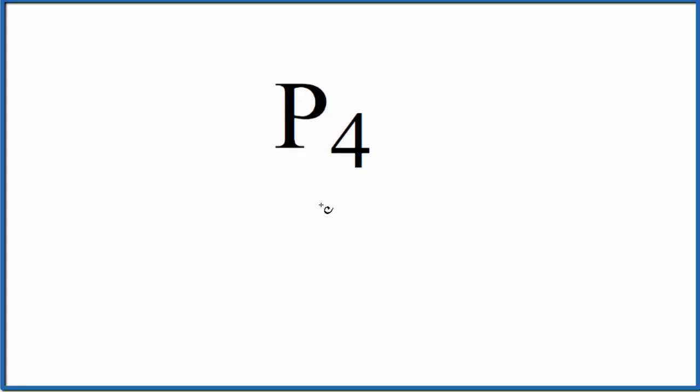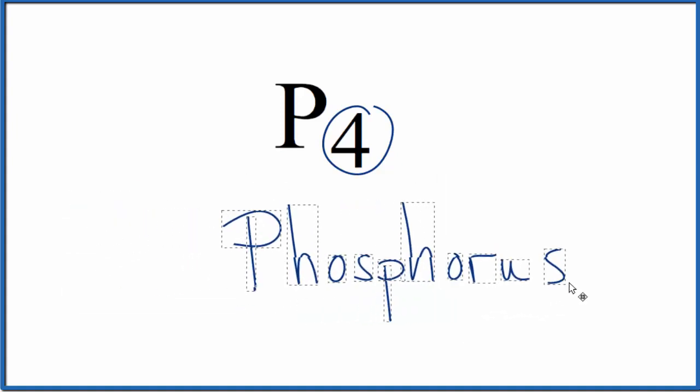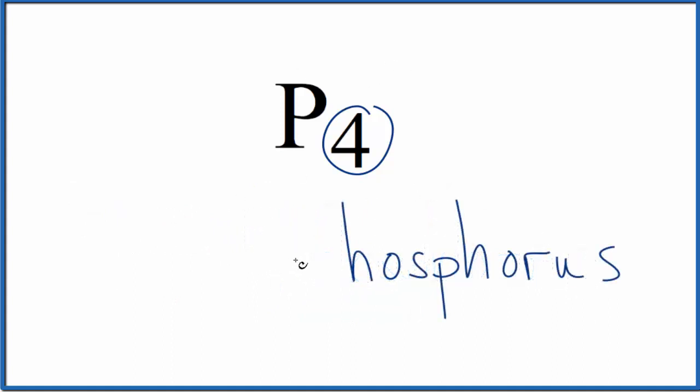So to write the name, we're going to write phosphorus first, and then for the four we're going to put tetra in front of phosphorus. Let's move this over, make this a lowercase p, and then write tetra in front of it. And that makes the name for P4: tetraphosphorus.